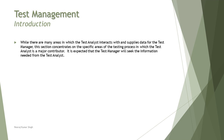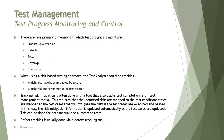In topic 2.1 we understand test progress monitoring and control. We have certain primary dimensions which can be measured with the help of metrics. As we understood in chapter one, metrics are calculations or formulae which help you measure an entity during the entire process. We have classified all these metrics to measure five primary dimensions of test progress: product risk (also called quality risk), defects, tests, coverage, and confidence.